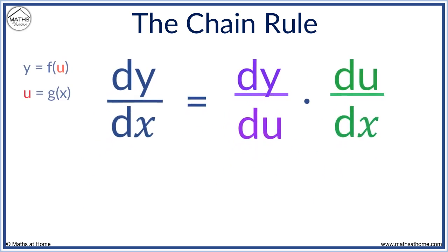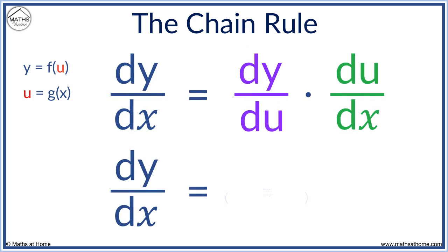In words, the chain rule can be written as dy/dx equals differentiate the outer function and keep the inside the same, and multiply this by what you get when you differentiate the inner function.